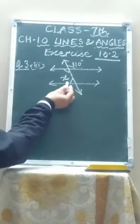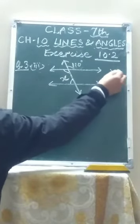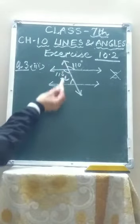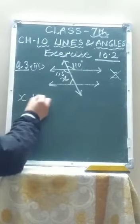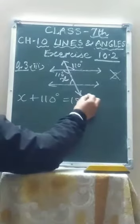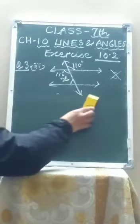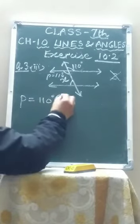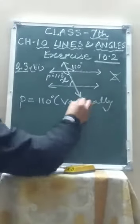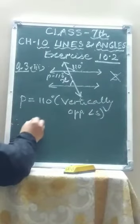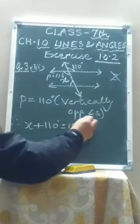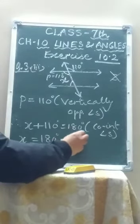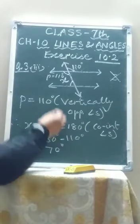There are two or more ways to solve this. Whenever a cross is made, those two angles are vertically opposite angles and they are equal. So if this angle is 110 degrees, this other angle is also 110 degrees. Now 110 degrees and x are co-interior angles, so x plus 110 equals 180 degrees. You should name the intermediate angle — say P — and write: P equals 110 degrees because they are vertically opposite angles. Then x plus 110 equals 180 degrees because they are co-interior angles. So x equals 180 minus 110, which is 70 degrees.